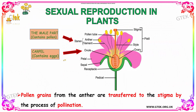Now we are going to discuss about sexual reproduction in plants. Here you can see the plant over here. It contains male and female parts. The male part is called the stamen. It consists of the anther and filament, which are represented over here — this part is called the anther and this is the filament.